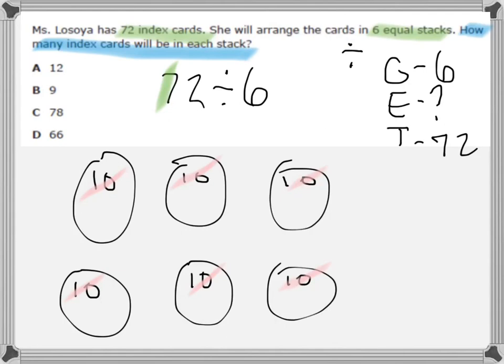Therefore, I am going to now go to splitting up two at a time — two more into each group. I had sixty — now with two in each group, I have sixty-two, sixty-four, sixty-six, sixty-eight, seventy. So close! Seventy-two! My whole seventy-two is split up into the six stacks. And in each stack, I have ten and two — that makes twelve. Seventy-two divided by six equals twelve.